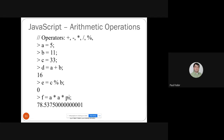In JavaScript the main arithmetic operators are plus, minus, multiplication, division, and remainder (modulo). Here are a few examples: a = 5, b = 11, c = 33. d = a + b gives 16. e = c % b — 33 modulo 11 gives remainder 0. f = a * Math.PI — a multiplied by the value of pi — basically rounds to 78.5375.